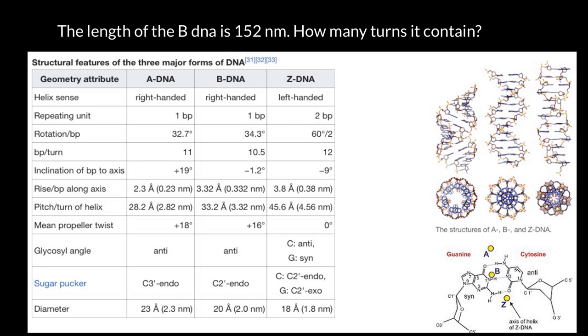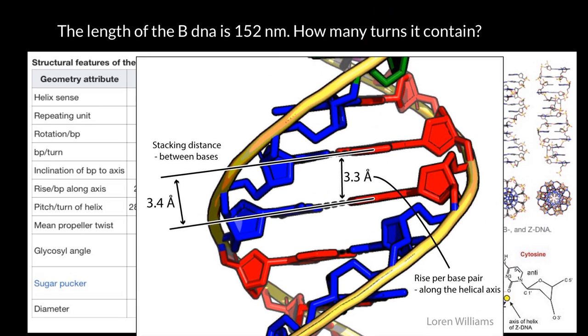If you search the literature, you would find that the distance per one full turn is about 3.3 to 3.4 nanometers. As you see, information is variable, so our answer also cannot be exact.